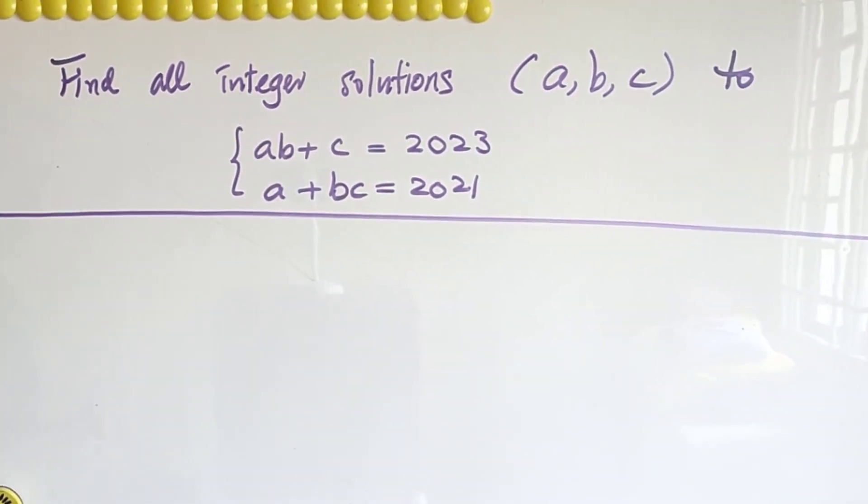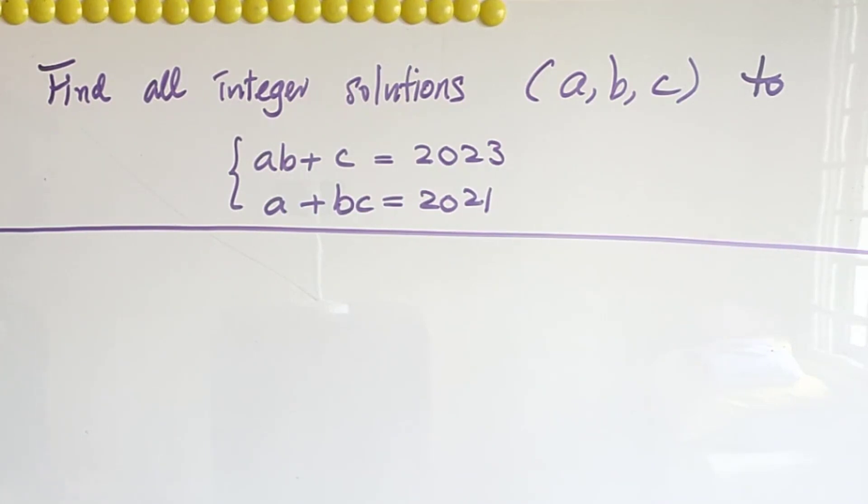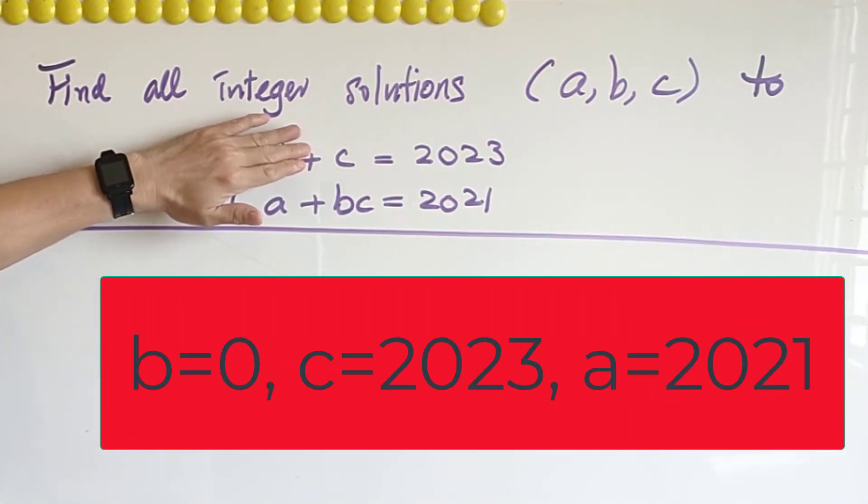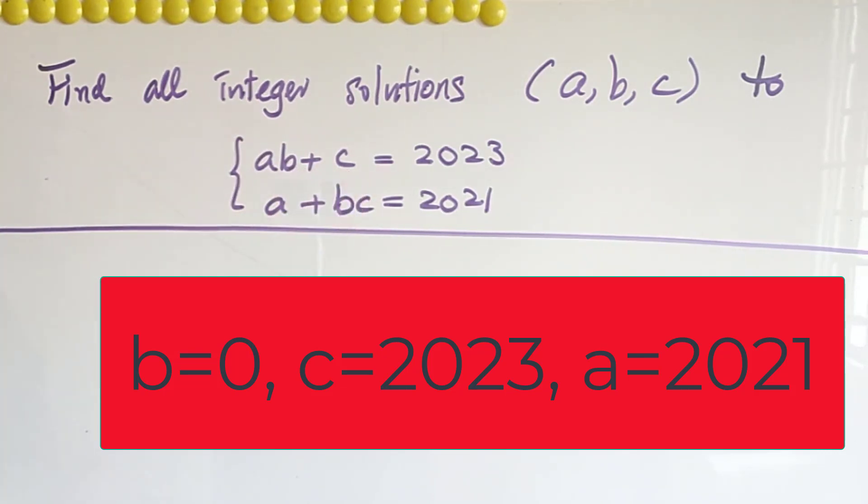By observation, there is one obvious solution. That is, when B equals to 0, C equals to 2023 and A equals to 2021.